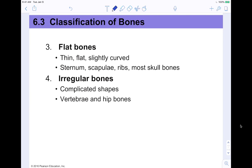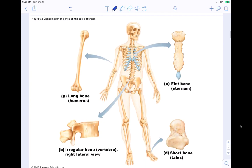Flat bones are, as you might guess, flat — and they're typically curved. We're dealing with the sternum, the scapulae or shoulder blade, the ribs, and skull bones. Lastly, irregular bones are a catch-all category for bones that didn't fit the other three groups — they have complicated shapes. Your vertebrae have very interesting shapes, and your hip bones — the pelvis — are kind of like a weird flattened heart shape, so those are definitely irregular.